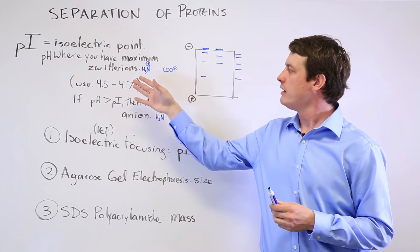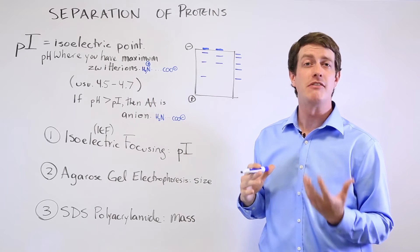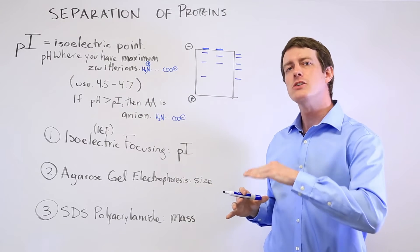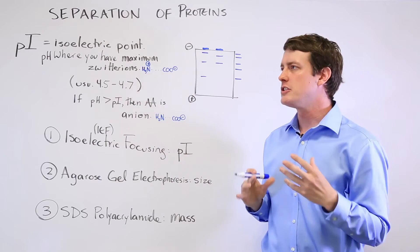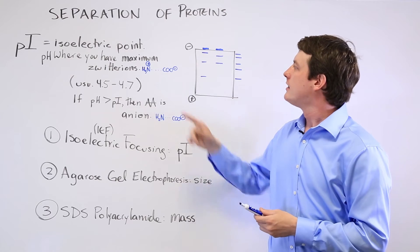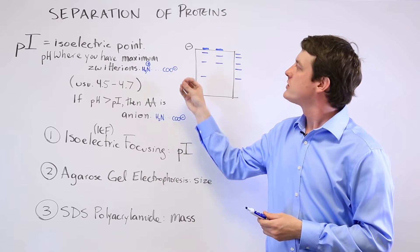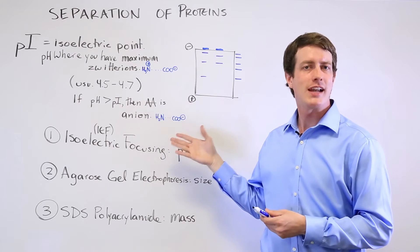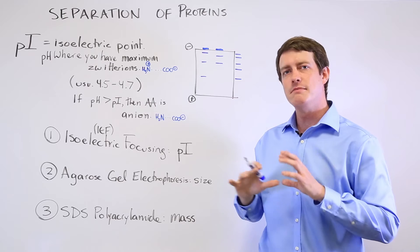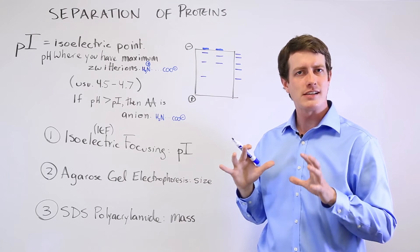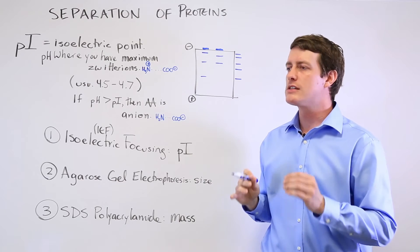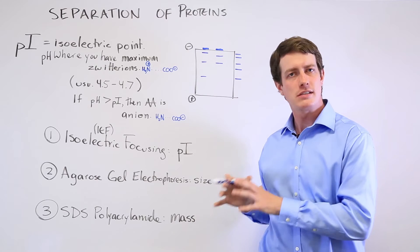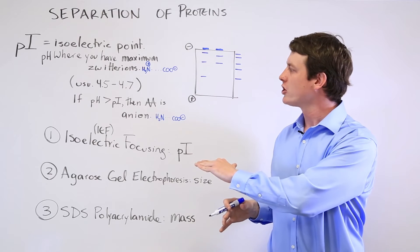Usually this is between 4.5 and 4.7 pH. As you move up the pH level into a more basic environment, the amino group tends to give up its proton and the amino acid becomes an anion. Remembering that the pH in your average cell is in the seven range, that means that most amino acids and proteins in your cells are negatively charged.